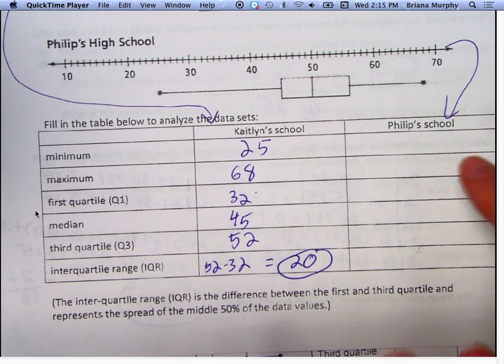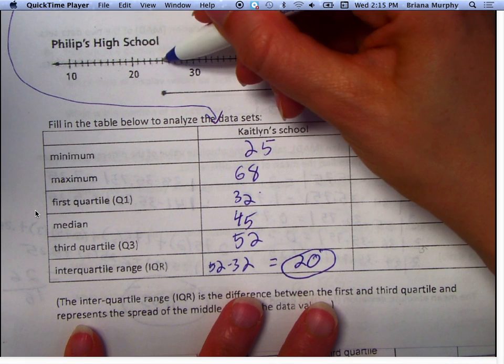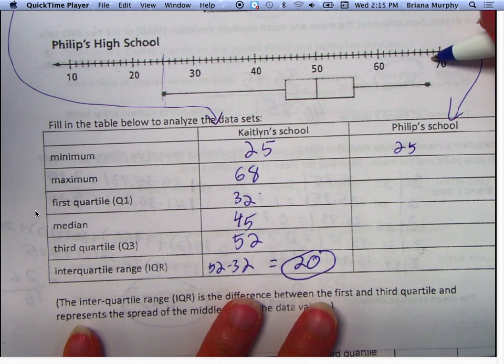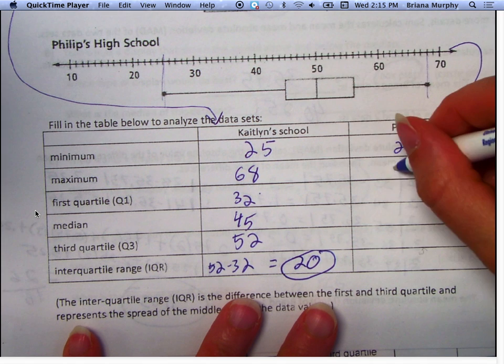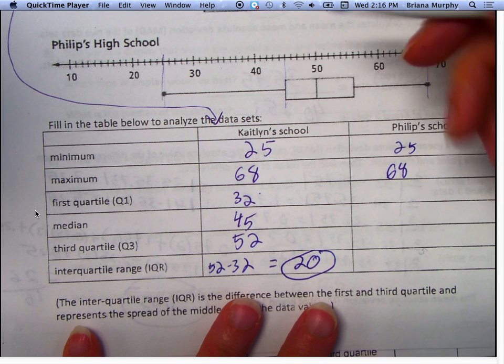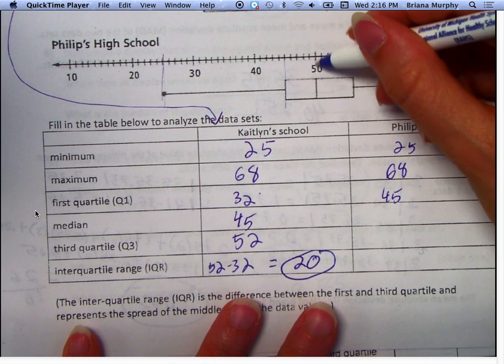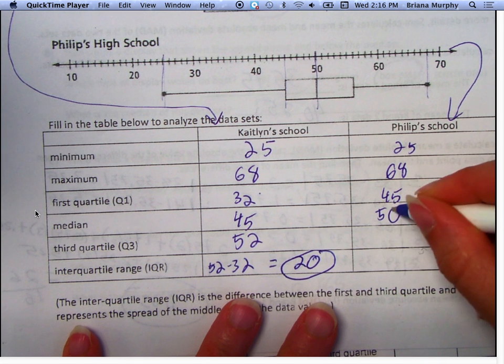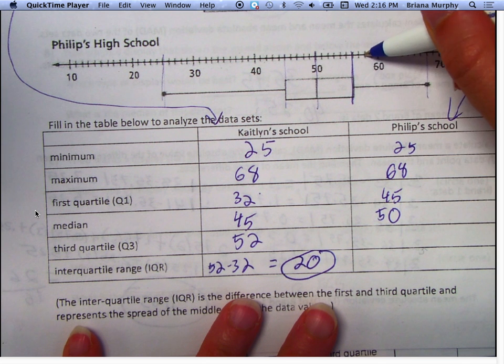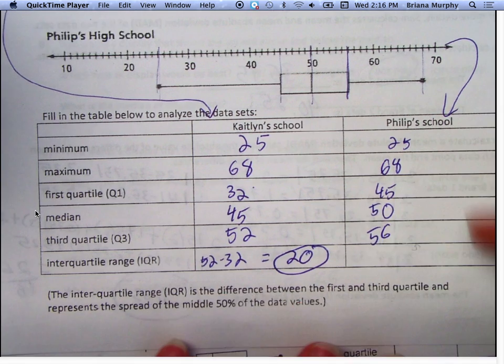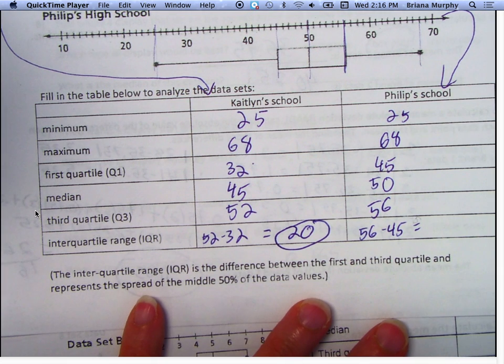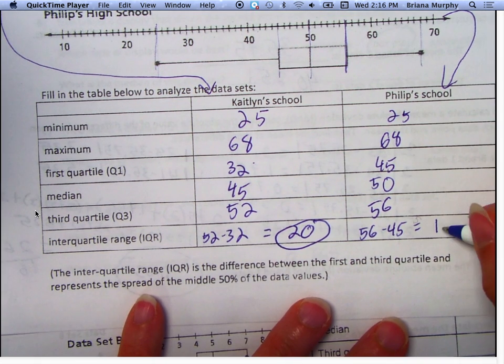Philip's school: my minimum, 25. My maximum, 68. First quartile, 45. Median is 50. Third quartile, 56. Then the third minus the first, so 56 minus 45 gives us 11.